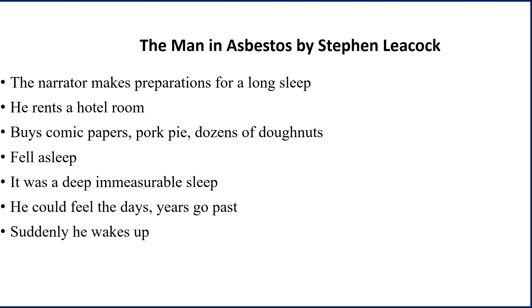Now the narrator makes preparations for a long sleep. He did it deliberately. What he wanted to do was to fall asleep after the customary fashion for two or three hundred years at least and wake and find himself in the marvel world of the future. So he made preparations for the sleep. He bought all the comic papers that he could find, even the illustrated ones. He carried them up to his room in his hotel. With them, he bought a pork pie and dozens and dozens of donuts. He ate the pie and the donuts, then sat back in the bed and read the comic papers one after the other. Finally, he felt the awful lethargy stealing upon him.